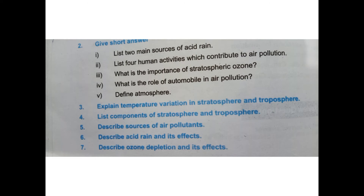Question and answer: list two main sources of acid rain — obviously nitric oxide and sulfur dioxide. When sulfur dioxide is combined with oxygen and then with water, it forms sulfuric acid. When NO2 is combined with water, it forms nitric acid.